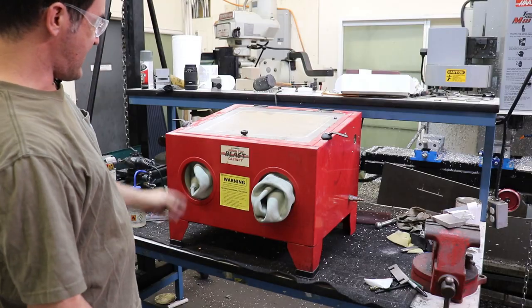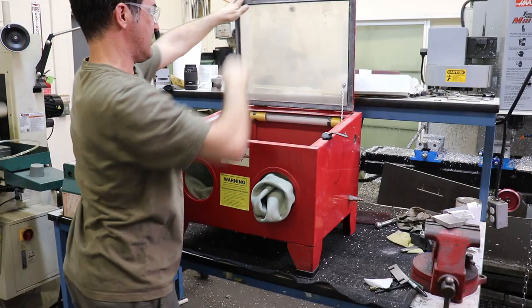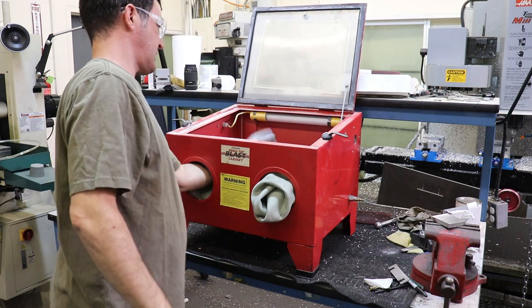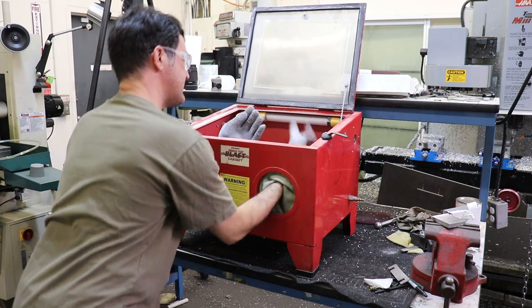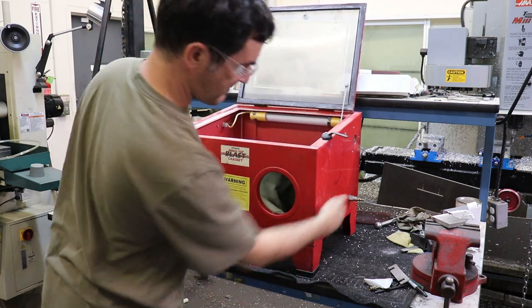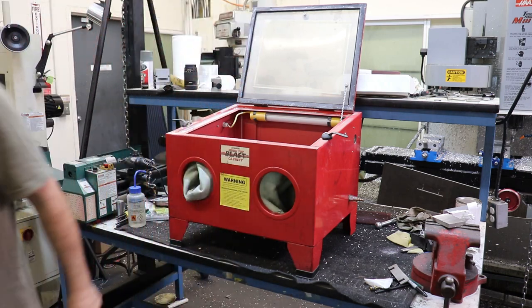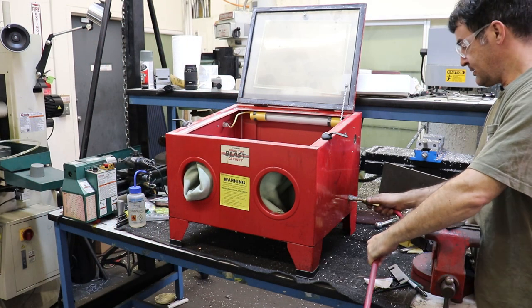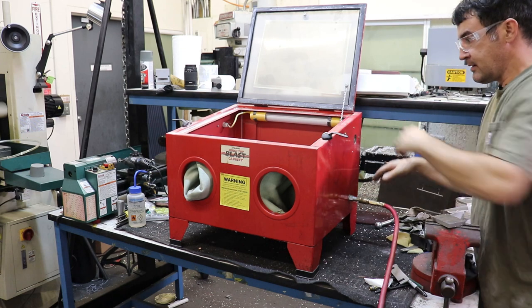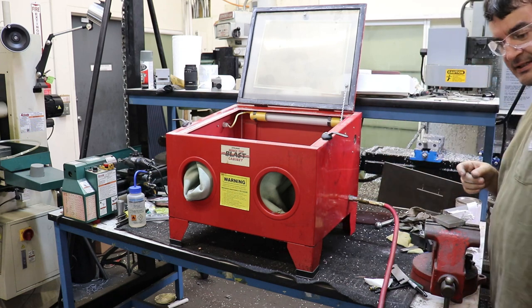All right here's the sandblasting cabinet. We've got our lid that props open. We've got two rubber gloves inside and we hook up compressed air to the side which connects to the nozzle. There's a subtle air leak inside of course.